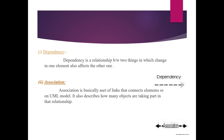Dependency is a relationship between two things in which a change in one element also affects the other. For example, if we add a CSS file and change something in that CSS, then the other pages that use it will also change. So those pages are dependent — this is dependency: a change in one page also affects the other pages.